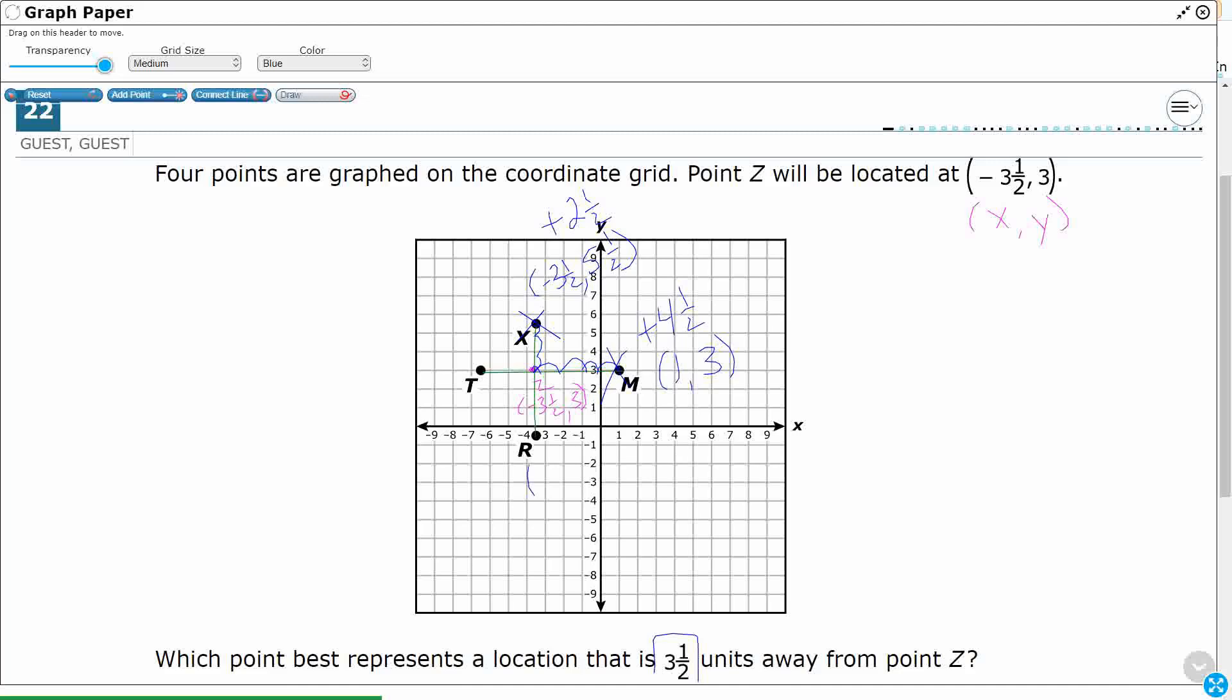So take a look: the x value is going to stay the same. It's negative 3.5. But then take a look at my y value. It's down between the x-axis 0 and the negative 1. So it's going to be negative 1.5.